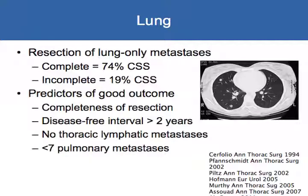The predictors of good outcome for lung metastasectomy are completeness of resection, a disease-free interval — if disease-free for longer than two years, they're more likely to have a better outcome — the absence of lymph nodes involved in the chest, and a smaller number of metastases at the time of diagnosis.